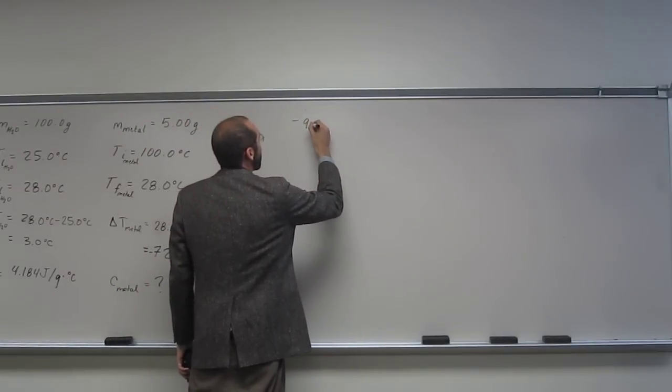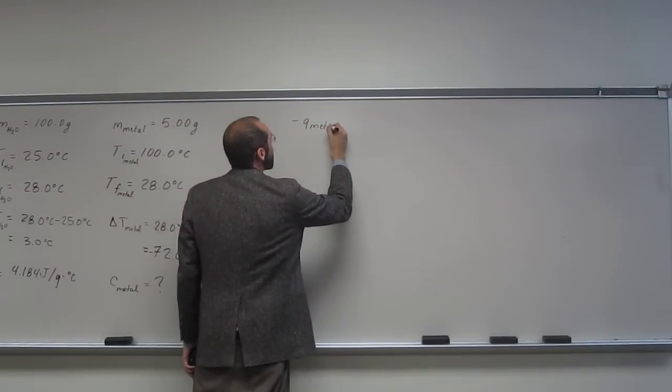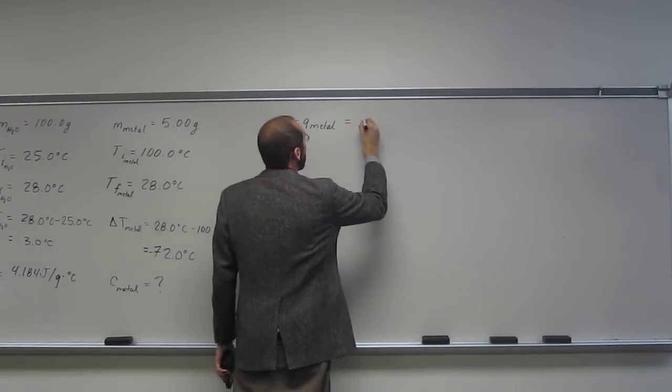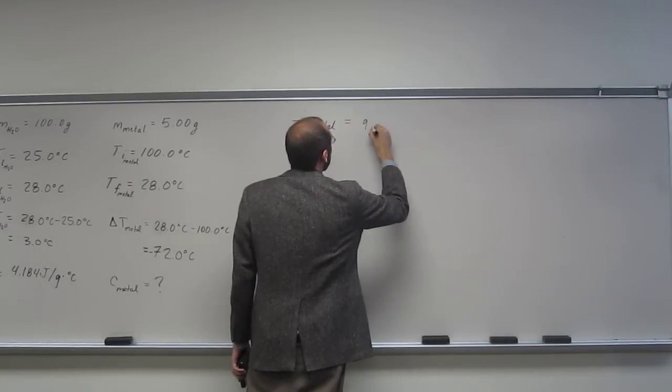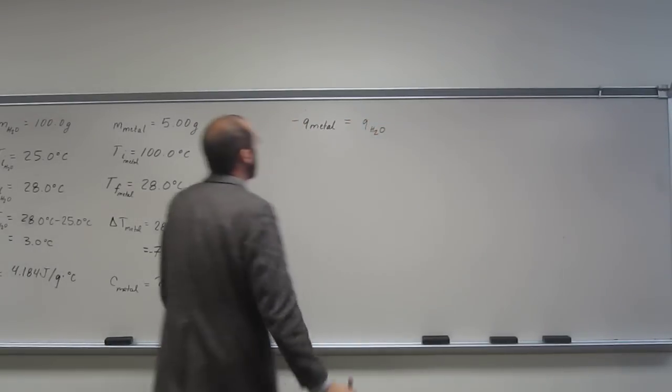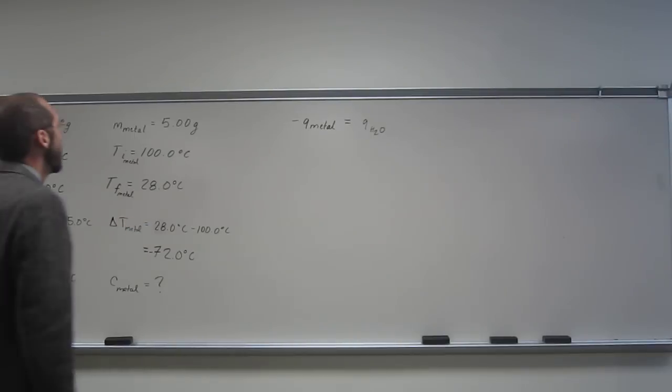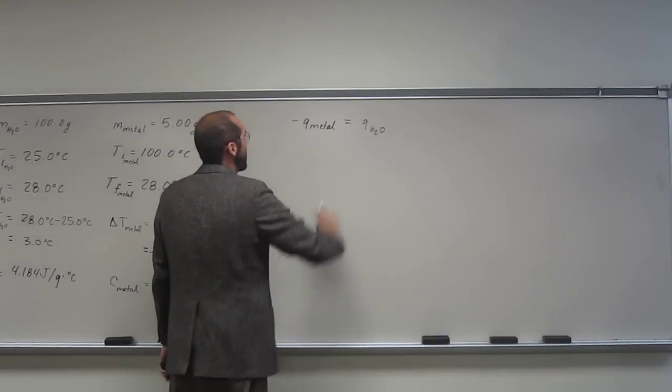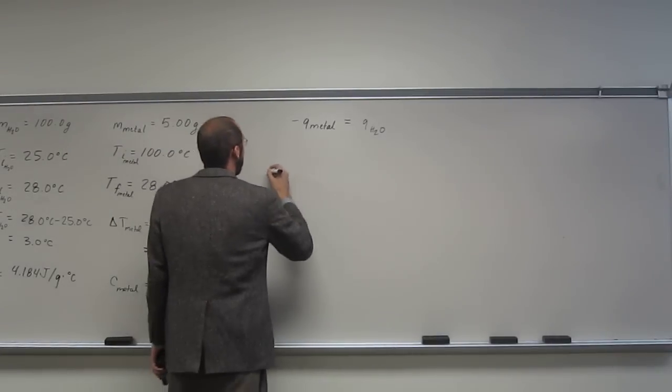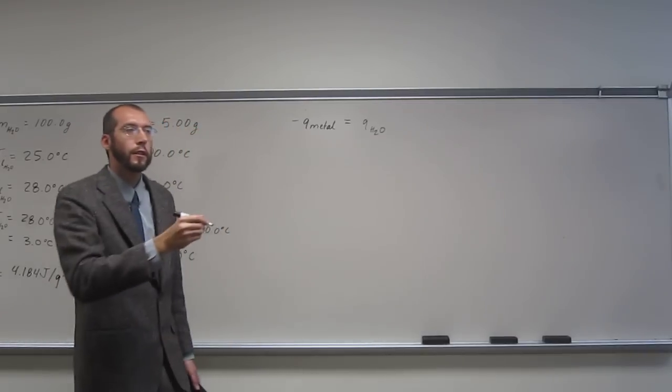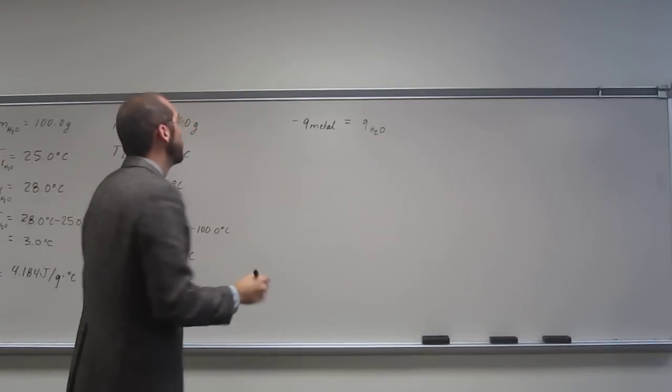So what's happening? The metal, if you want to think of it this way, is losing heat like that. So the water is gaining that heat. Is everybody okay with that? So all we've got to do is set both sides equal to each other. Remember, Q equals M C delta T. Do you guys recall that formula?